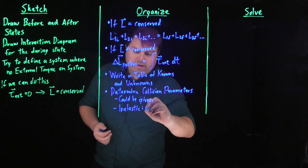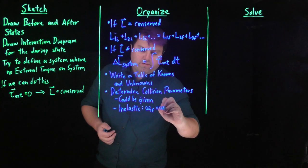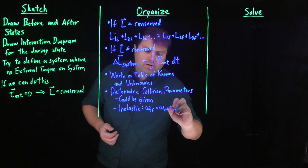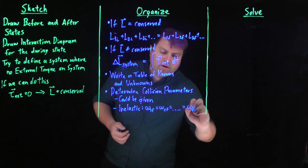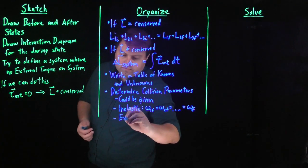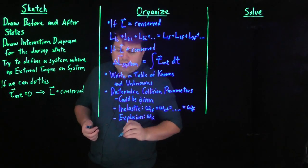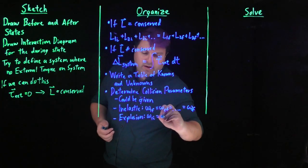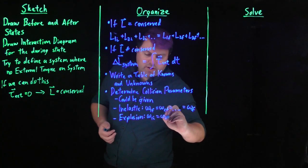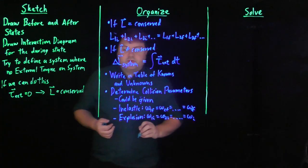but sometimes we might be given just a statement such as inelastic. If it's inelastic, what that means is that the final angular velocity of 1 is equal to the final angular velocity of 2, so on and so forth, that we just have one final angular velocity. If we have an explosion, we're saying that the initial angular velocity of 1 is equal to the initial angular velocity of 2, and that they all have the same initial angular velocity.